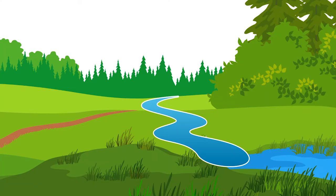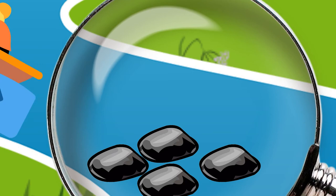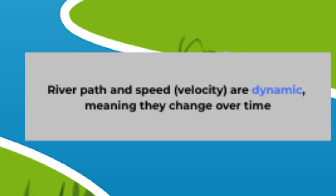River water is much more than just the water that we see on the surface. There are hidden features that can directly impact how you interact with the water. In addition, the ways that rivers flow — namely their path and their velocity — are dynamic, meaning they have a natural tendency to change over time.